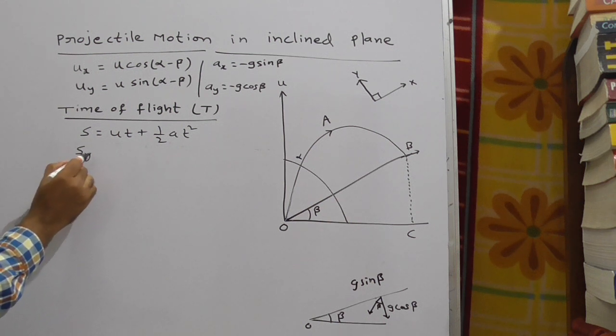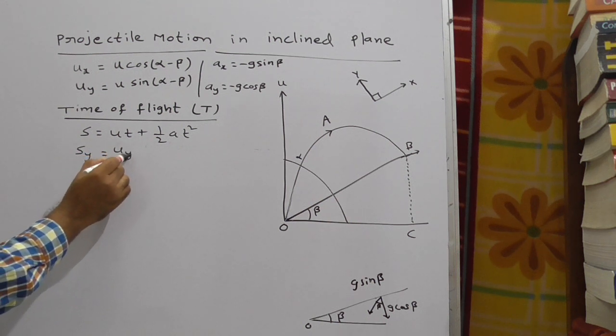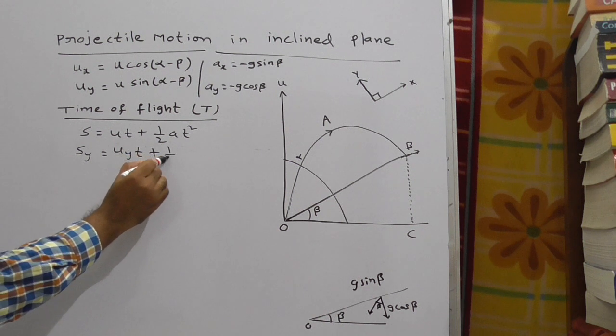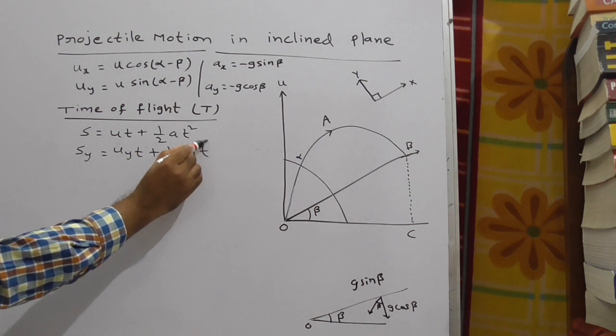With respect to y, you can write it as sy is equal to uy t plus half ay t square.